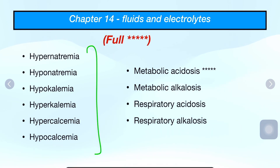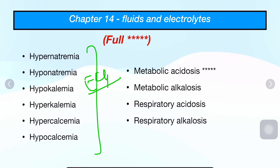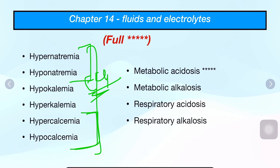Topics include hypernatremia, hyponatremia, hypokalemia, hyperkalemia — you need to know all of these plus ECG changes. Know the normal values, grading, types, and features of all electrolyte imbalances. Acid-base disorders are also important.